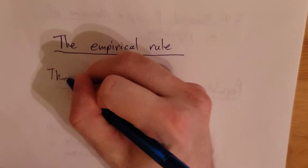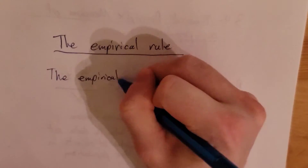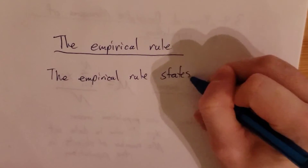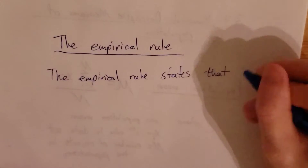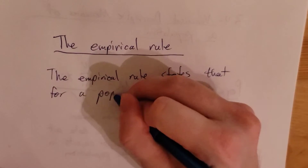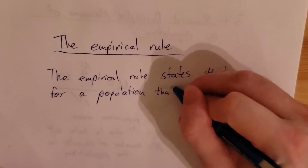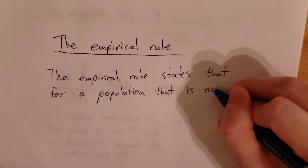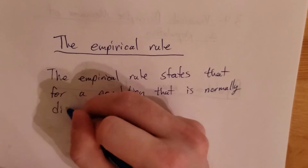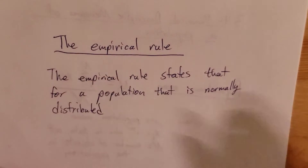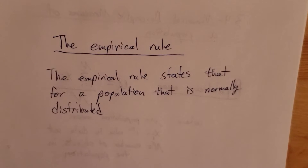We're going to start with the empirical rule, which states that for a population that is normally distributed. What does that terminology 'normally distributed' mean? It means that the data is symmetrical about the mean.